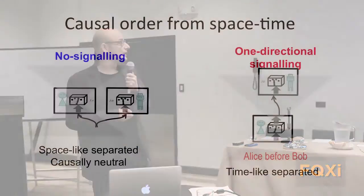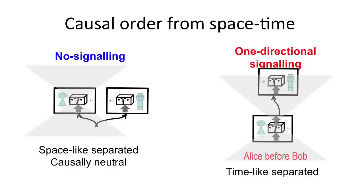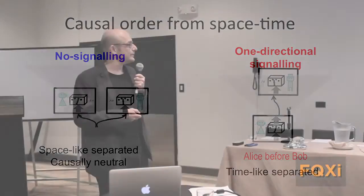Once again, causal order in traditional formulation of quantum mechanics is well defined. We have two situations: either we have no signaling correlations for observers that are space-like separated, or we do have signaling correlations. But these signaling correlations are always one directional signaling from the past to the future, like in time-like separated experiments. What I mean with causally ordered is in very operational sense.